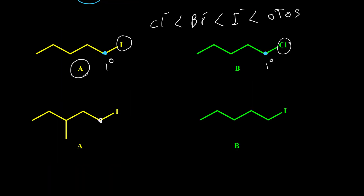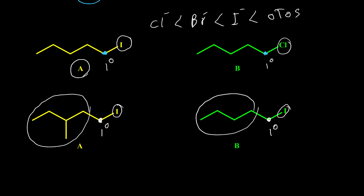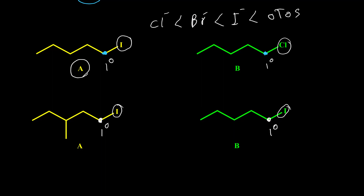For the next example, both carbons are primary and their leaving groups are the same, but the difference is this alkyl group is bulkier than the other because of this methyl group. When we have more bulk, we have more steric effect, so addition of the nucleophile gets harder. So in this case, when we have a bulkier group, we have a slower reaction, and B is faster in SN2 reaction compared to A.